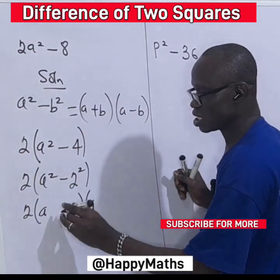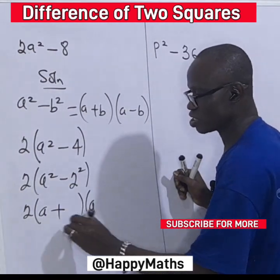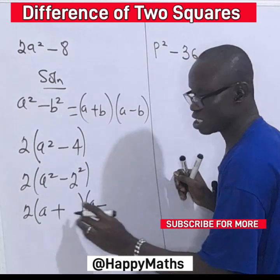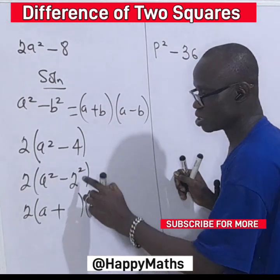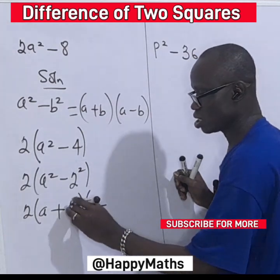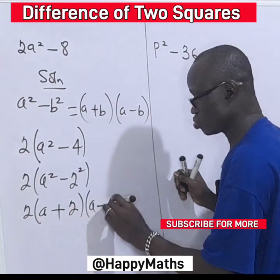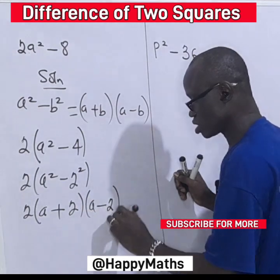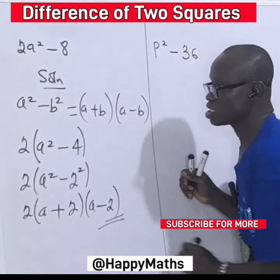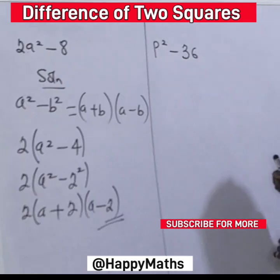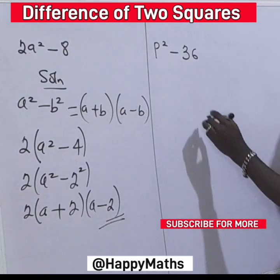Two a squared is a times a. Then this negative will be positive — negative times negative is positive. Two squared is two times two. That is the answer.